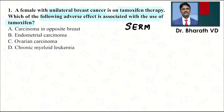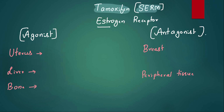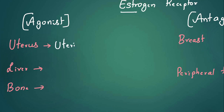The correct answer is option B — endometrial carcinoma. Tamoxifen is a selective estrogen receptor modulator, meaning in certain receptors it acts as an agonist or partial agonist, and in certain places it acts as an antagonist. In the uterus it acts as an agonist, so it can lead to endometrial cancer or uterine cancer.